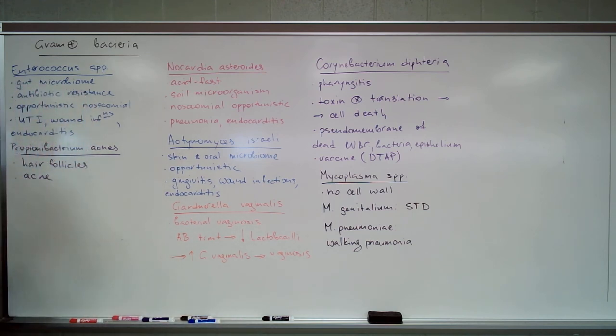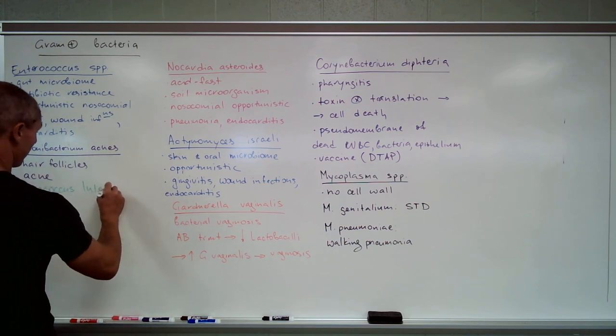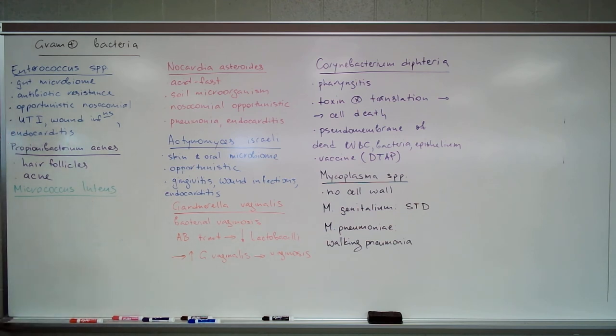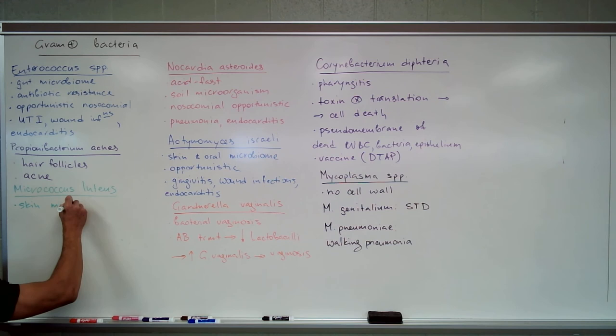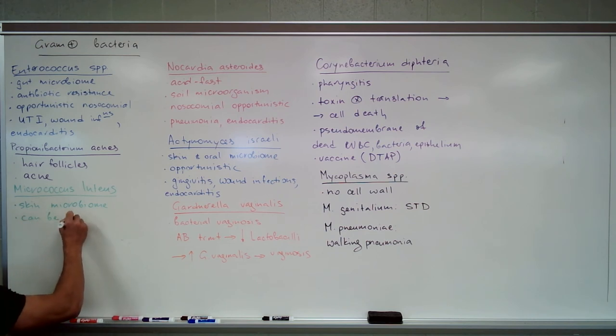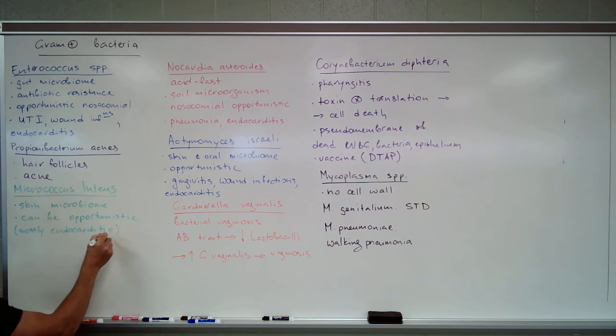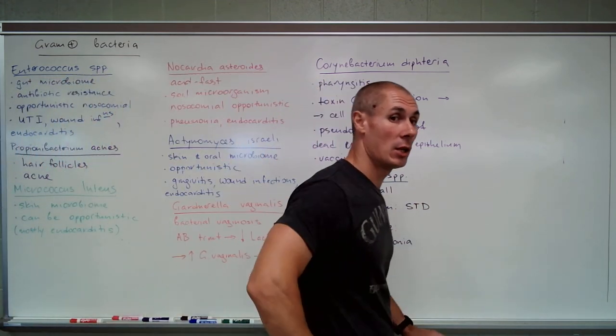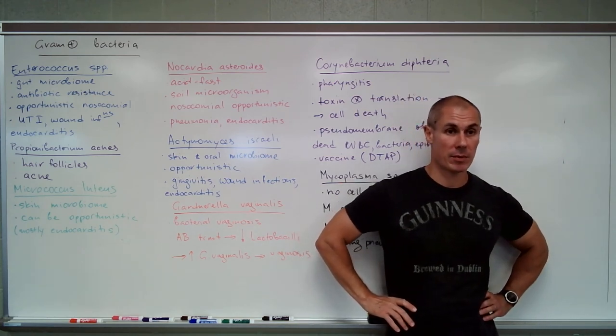Finally, I don't know why I chose it but anyway, Micrococcus luteus. Micrococcus means small coccus and luteus means yellow, which reflects the color of the colonies this microorganism produces. It's a component of the skin microbiome. Nothing too particular about Micrococcus. Can it be an opportunistic pathogen? Yes, mostly causing endocarditis.